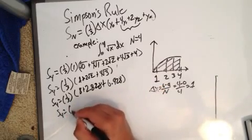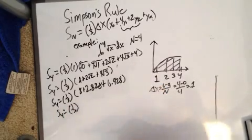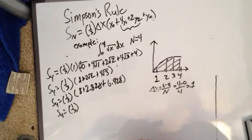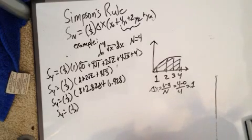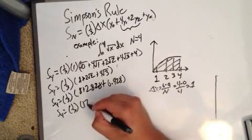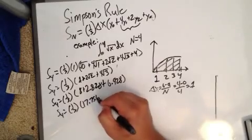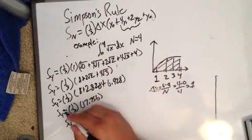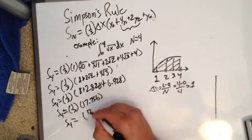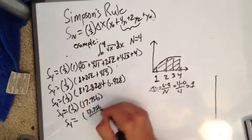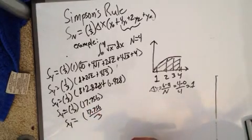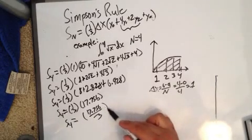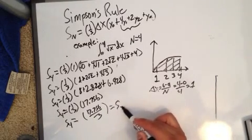So S_4 is equal to 1/3 times 8 plus 2.828... So I got 17.756. So S_4 is equal to 17.756 all over 3. And I got 5.918.